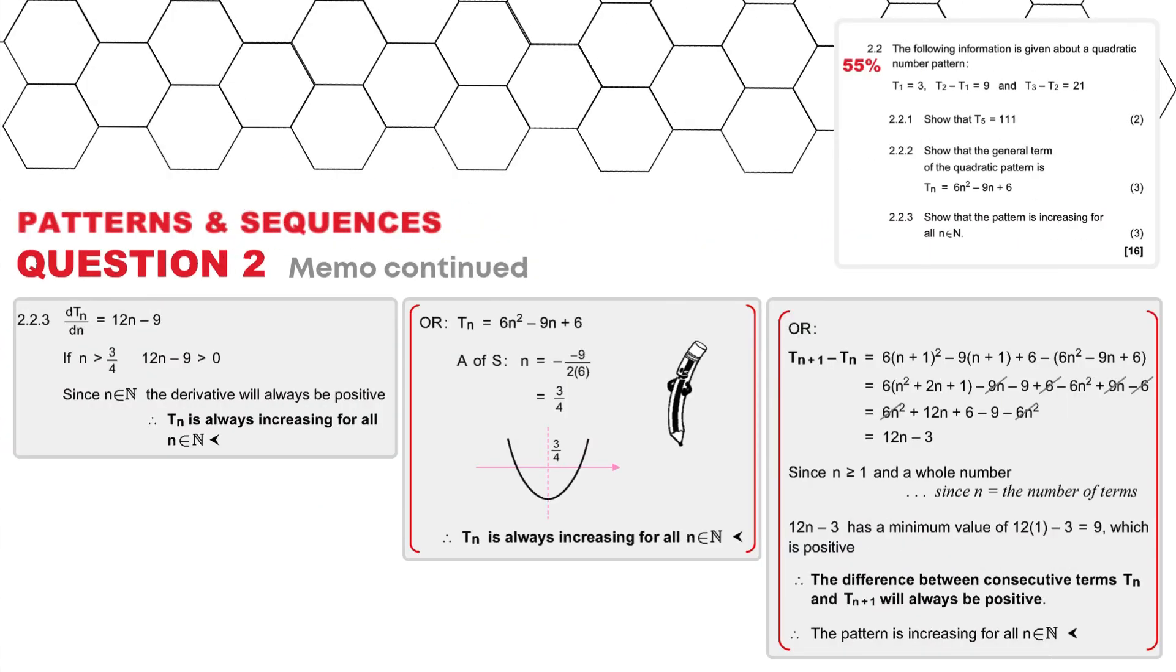And then the memo for question 2.2.3, where they asked to show that the pattern was increasing. You will see two alternatives given here as well, including a visual of the parabola represented by the quadratic, with 1, the first natural number, to the right of the symmetry line. Pause again if you'd like to spend some time on the memo.